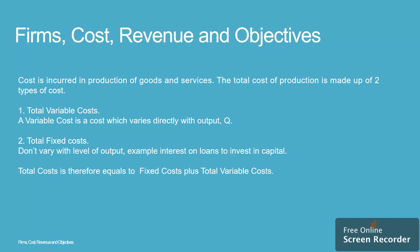A variable cost is a cost which varies directly with output. 2. Total fixed costs, which don't vary with the level of output — for example, interest on loans to invest in capital. Total cost is therefore equal to fixed costs plus total variable costs.